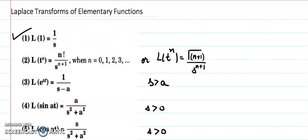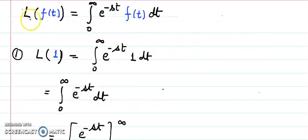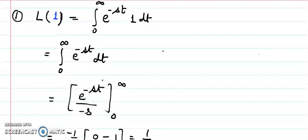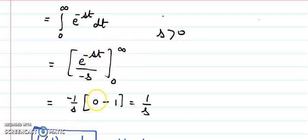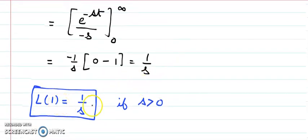The Laplace transformation of 1 is 1/s. Let's see how. As per the definition, the Laplace transformation of any function equals the integral from 0 to infinity of e to the power minus st times f(t). If the function is 1, we integrate e to the power minus st only. The integration of that exponential with respect to t gives us 1 over minus s times e to the power minus st. Applying the limits, since s is positive, e to the power minus infinity tends to 0, and e to the power 0 equals 1, giving us 1/s.